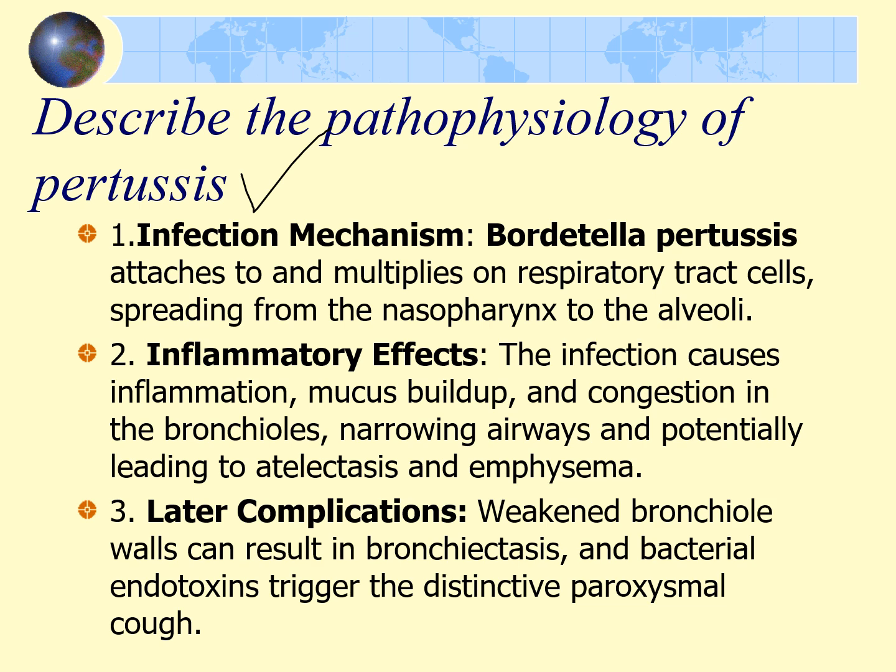These changes narrow the bronchioles, causing atelectasis and emphysema in areas with partial obstruction. Inflammation in the bronchioles weakens their walls, eventually leading to bronchiectasis at a later stage. The organism also secretes an endotoxin at the site of multiplication, which is believed to trigger the characteristic paroxysmal cough.